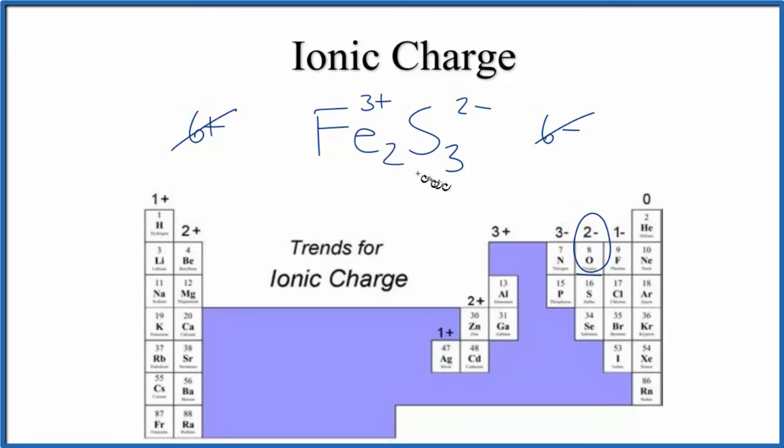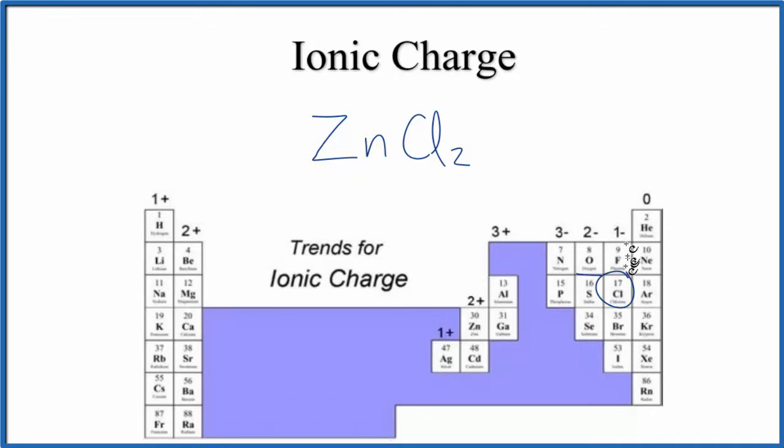We'll wrap up with one more: ZnCl2. Again, neutral compound, all the charges add up to 0. Chlorine has that 1-, and we have two of them, so 2-. The zinc has to be 2+. But we also know zinc is an exception for the transition metals—it's always 2+. So we could have known that without figuring out the chlorine. If we name this compound, because zinc is always 2+, we can just call it zinc chloride. We don't have to call it zinc(II) chloride.